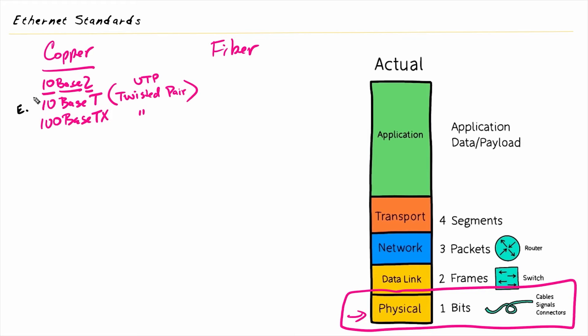So 10BASE-T could be referred to as just Ethernet. 100BASE-TX could be referred to as Fast Ethernet. And then as we go to 1 gigabit or 1,000 megabits per second, that would be 1000BASE-TX. 1,000 refers to 1,000 megabits per second, which we also know and refer to as Gigabit Ethernet, once again using unshielded twisted pair.